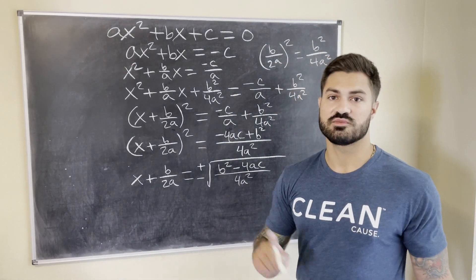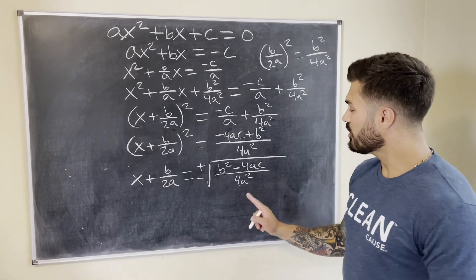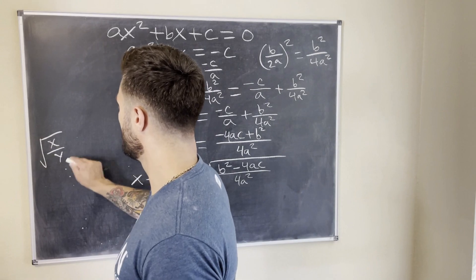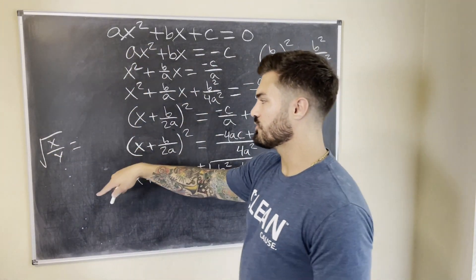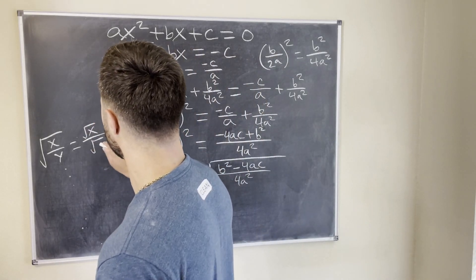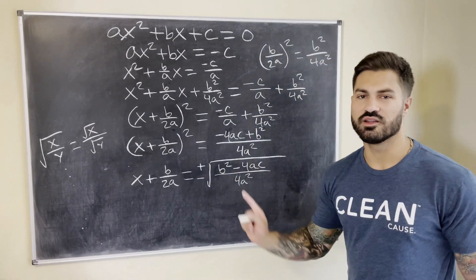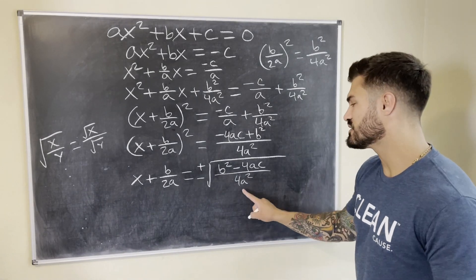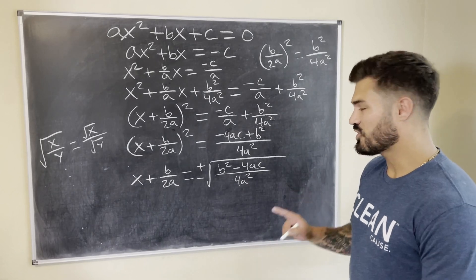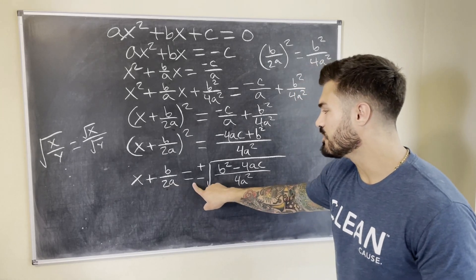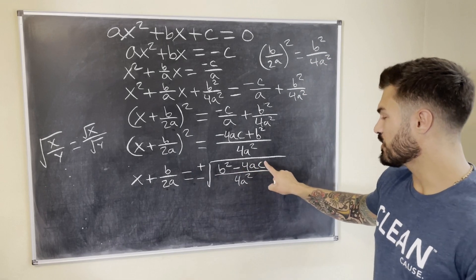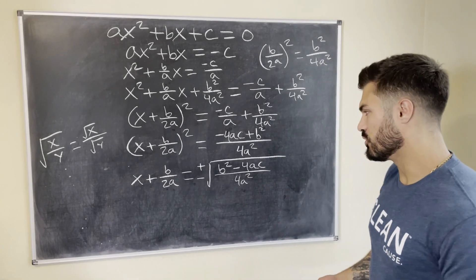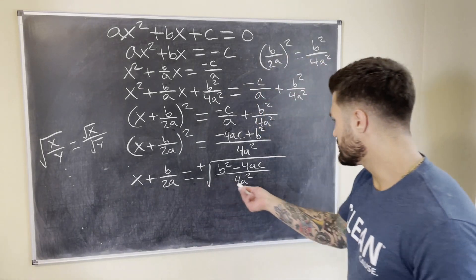Subtracting b/2a from both sides technically solves for x, but we can simplify further. Using the square root property, √(x/y) = √x / √y, we can split the right side. The denominator becomes √(4a²) = 2a, which is clean. This also means when we move b/2a over, both terms share the denominator 2a, so we can combine them easily.